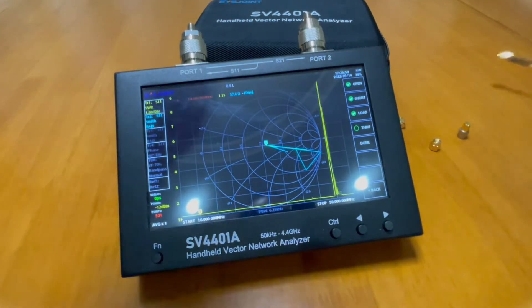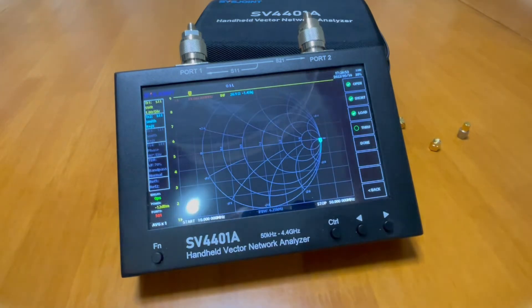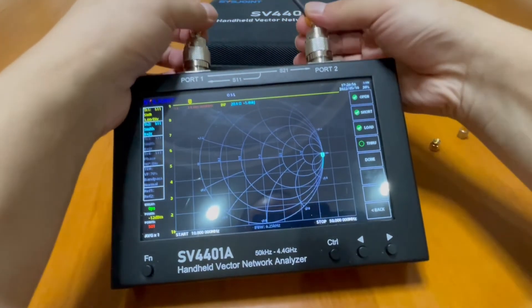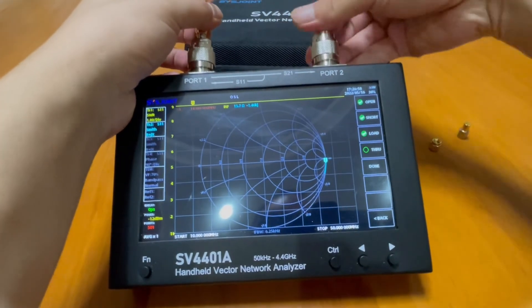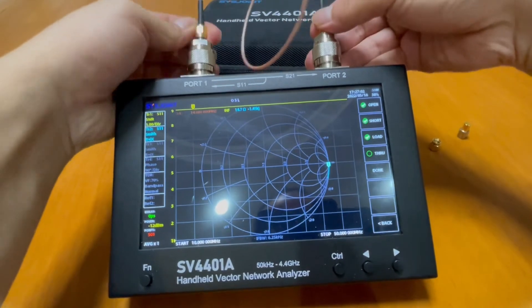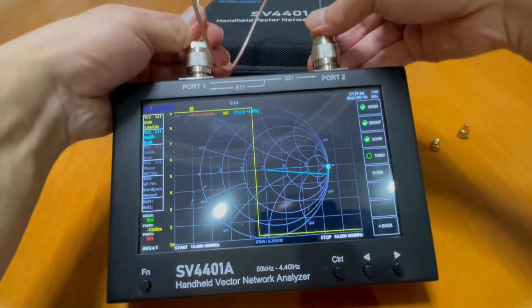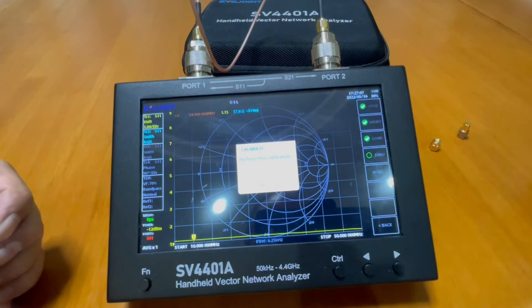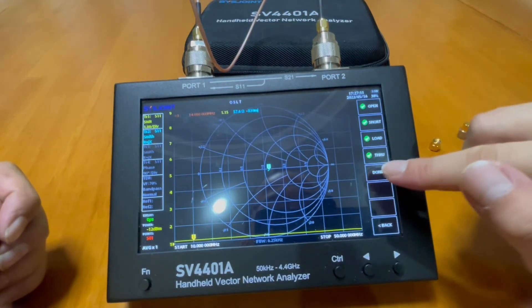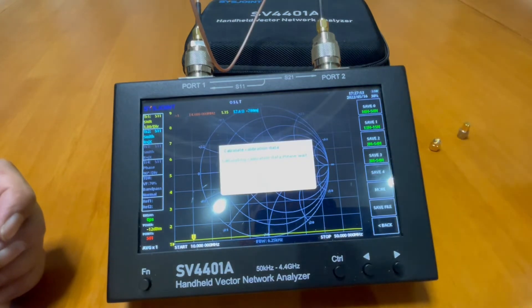For the through calibration, what you need to do is put the cable provided to the two ports, connect to the two ports, and click through. Now the calibration is done and you can click done.